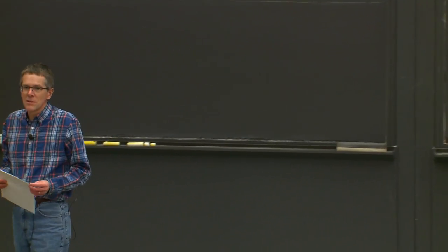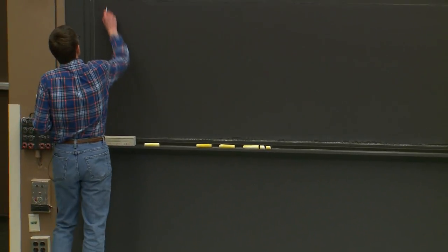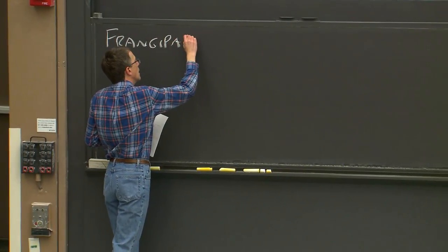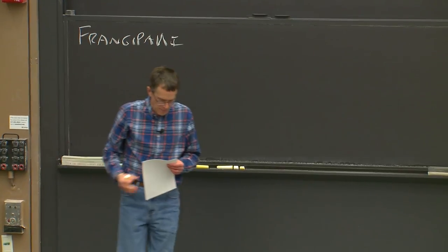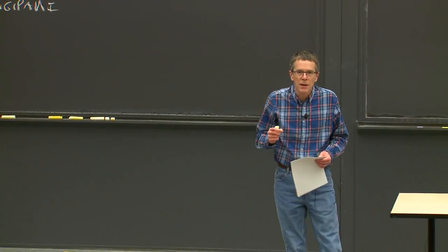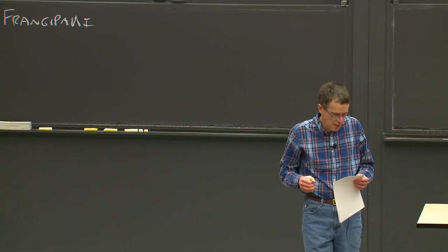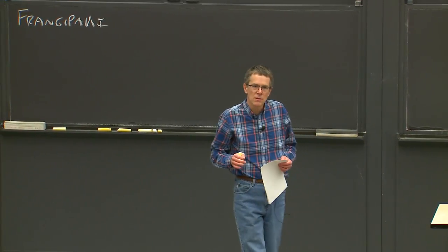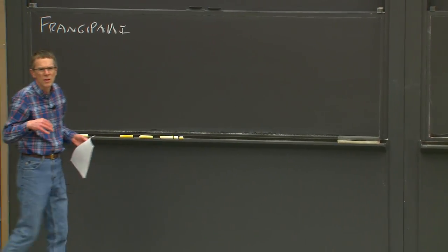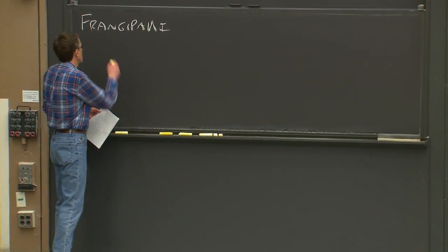Today, the paper I'm going to discuss is Frangipani. This is a fairly old distributed file system paper. The reason why we're reading it is because it has a lot of interesting and good design, having to do with cache coherence, distributed transactions, and distributed crash recovery, as well as the interactions between them. Those are really the ideas we're going to try to tease out.